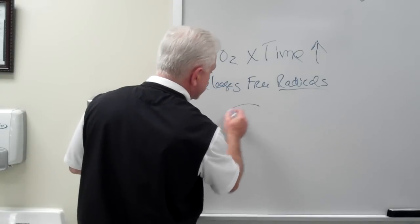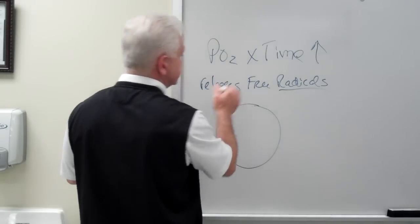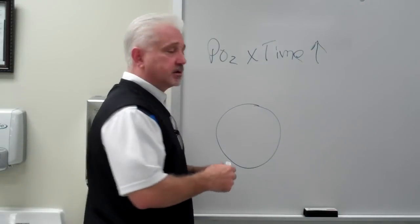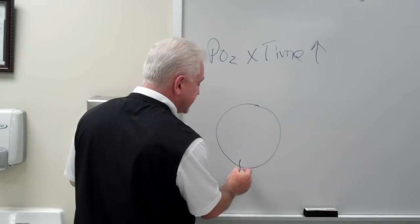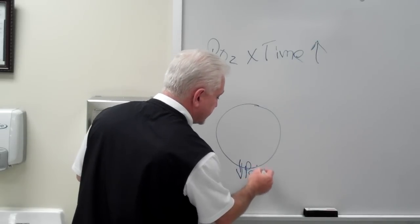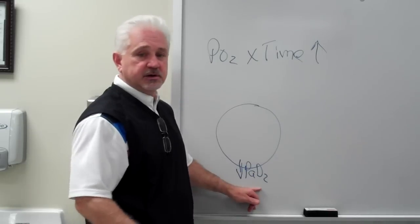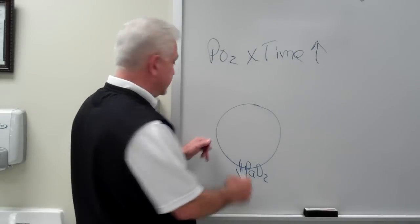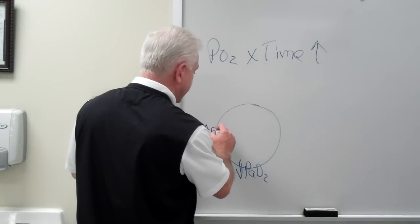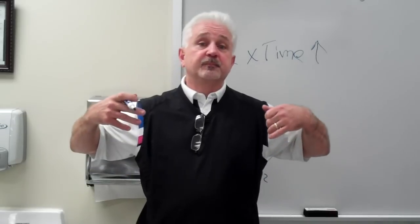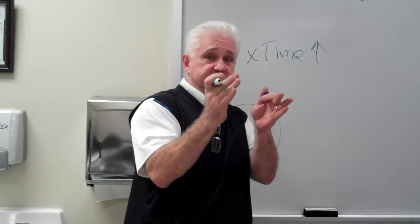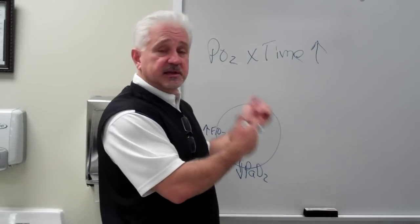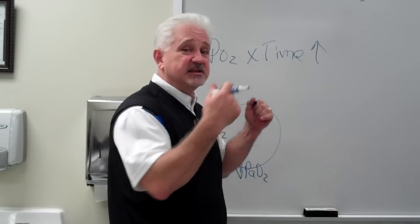Another thing to remember, besides PO2 times time, is the vicious cycle. Why do we give a patient oxygen? Because they have a low partial pressure of oxygen in the arterial blood — decreased PAO2. What do we do? Increase the FiO2. When should we stop? When the underlying condition that made us put the patient on oxygen has been resolved. But remember, oxygen releases free radicals and it can destroy lung tissue.